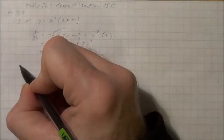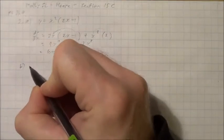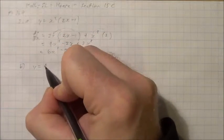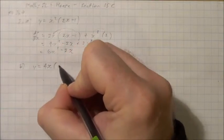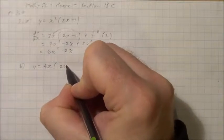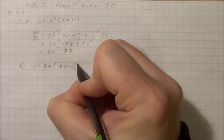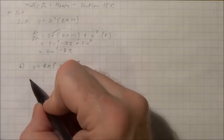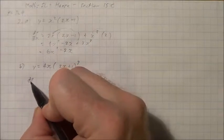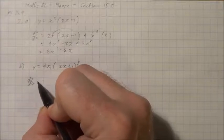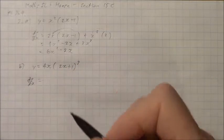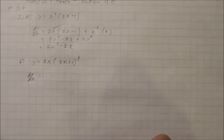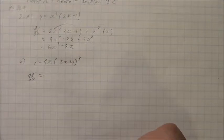Part B is given as y equals 4x times the quantity 2x plus 1, all cubed. Again, I'll find dy by dx using the product rule.